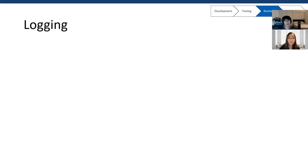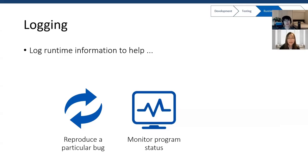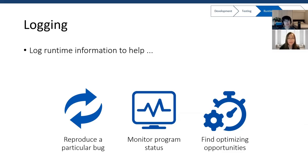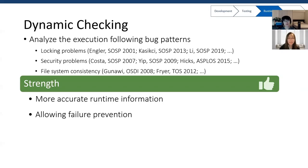Even with very careful testing, some bugs may still escape to runtime. Here we can use additional runtime information to guide bug detection and fixing. Software log messages are a well-established practice to record this information — they record program status and relevant operations. Therefore, developers can easily reproduce a particular bug and diagnose the root causes. Logs also help find optimization opportunities, as they provide rich runtime information and profiling details. Dynamic checking is designed to detect software bugs and vulnerabilities during program execution. It analyzes execution following bug patterns, including locking and security problems. When a risky situation is detected, it is able to react immediately and terminate a program to prevent security attacks.